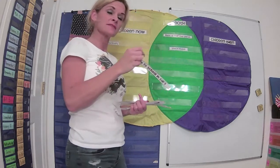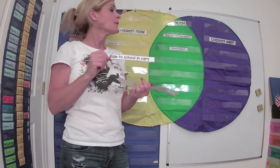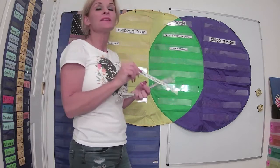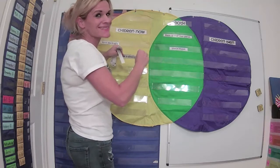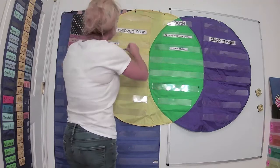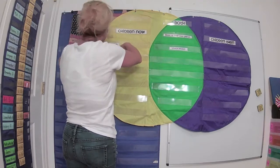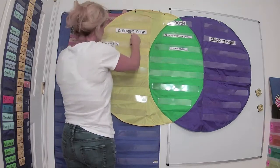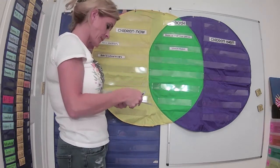'Ride to school in cars.' Could children long ago ride to school in cars? No, they could not because cars didn't exist. The children did, but cars didn't. So we're going to put that in children now — it's only true for children now.